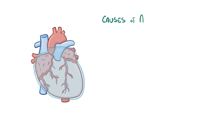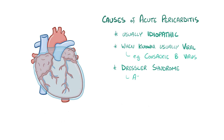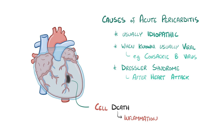The cause of acute pericarditis is usually idiopathic, meaning that we don't know what causes it. Most of these are thought to be related to viral infections, like Coxsackie B virus. Another cause is Dressler syndrome, which occurs several weeks after a myocardial infarction, or heart attack. When heart cells die in a myocardial infarction, it leads to massive inflammation that also involves the serous pericardium.